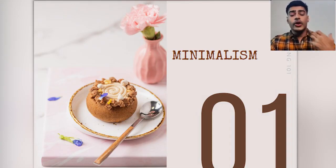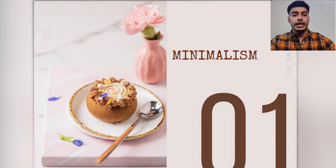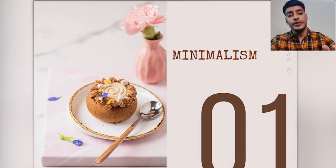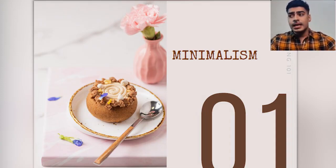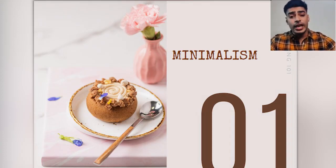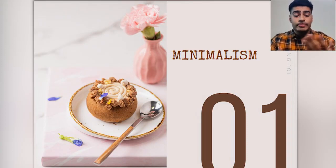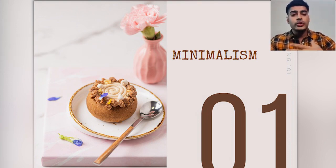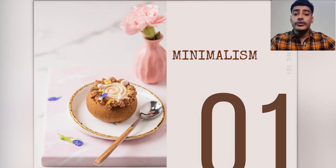In food photography, minimalism means solely focusing on the subject that really matters — the food — rather than cluttering your frame with too many props. Minimalism lets you focus on every single element: if you're using garnishes like coriander or basil leaves, even a single blemish or brown spot becomes very noticeable. Whether the plate is too large, or there's too much negative space around the food — all of that really matters.